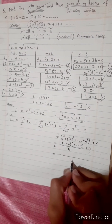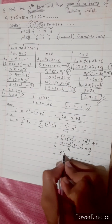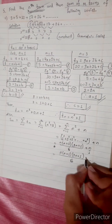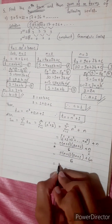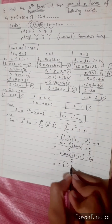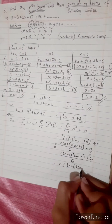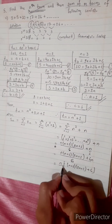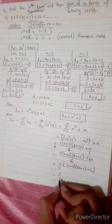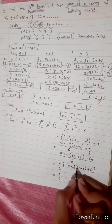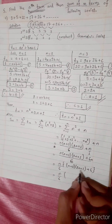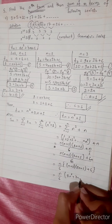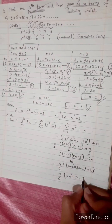Taking a common denominator of 6, we get n(n+1)(2n+1) plus 6n, all divided by 6. Taking n as common, the remaining term is (n+1)(2n+1) plus 6, divided by 6. Expanding: 2n squared plus n plus 2n plus 1, giving 2n squared plus 3n plus 1 plus 6, which simplifies to 2n squared plus 3n plus 7, divided by 6.